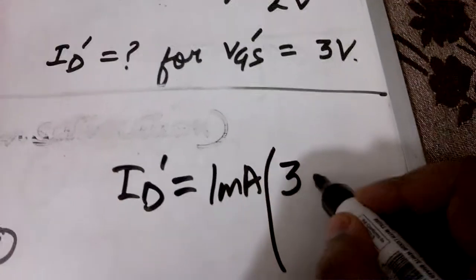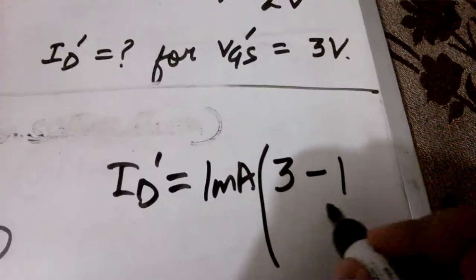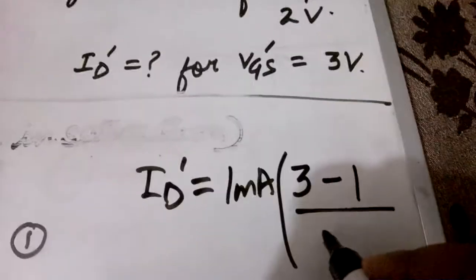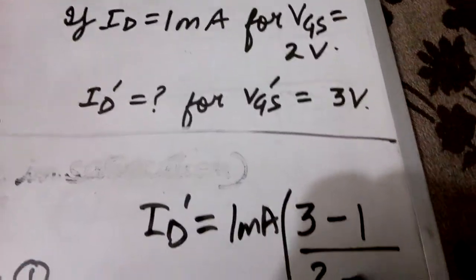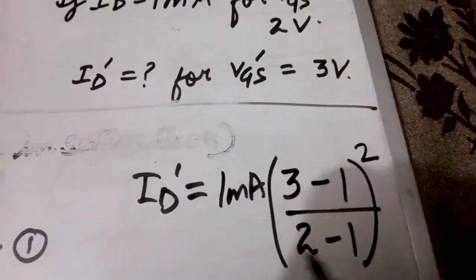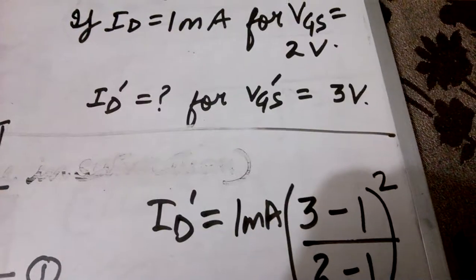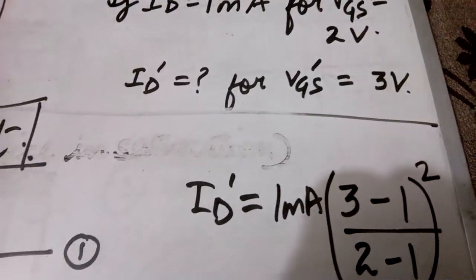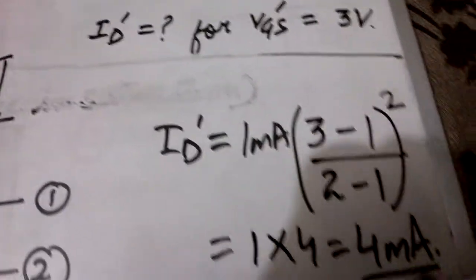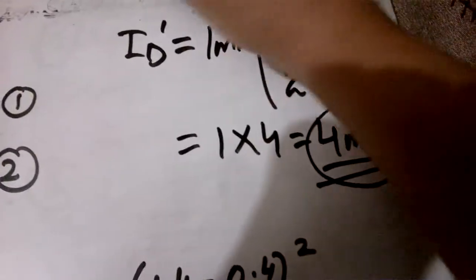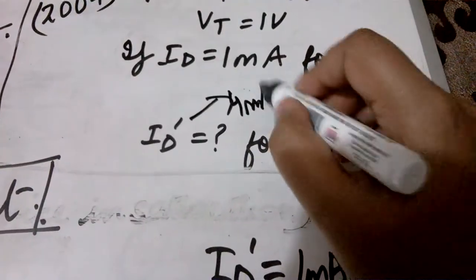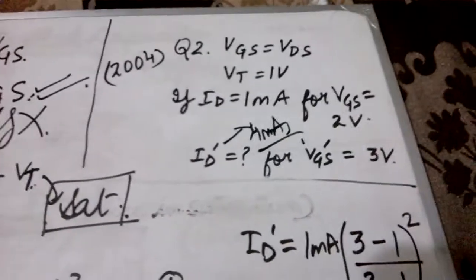This becomes 1 into 4, that is 4 milliamperes. So 4 milliamperes is the result. ID dash is 4 milliamperes for this particular case, and this is the solution.